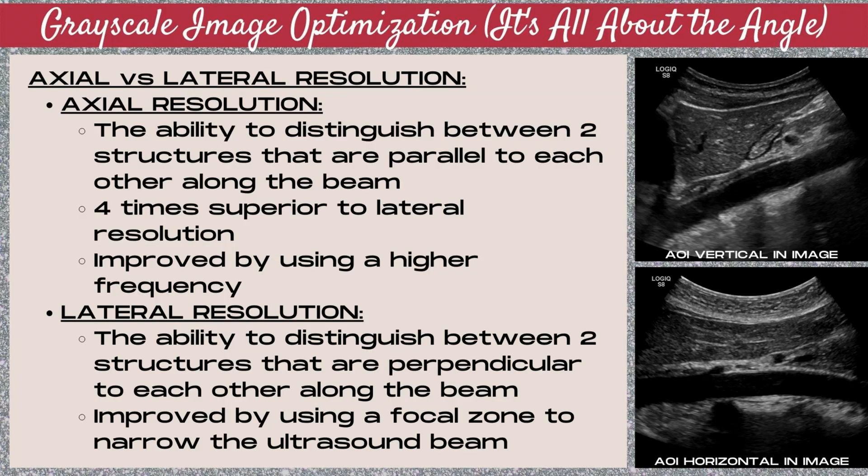So why does angle even matter when we're just optimizing grayscale images? It all goes back to resolution. Axial resolution is the ability to distinguish between two structures that are parallel to each other along the ultrasound beam, and this is four times superior to lateral resolution. Axial resolution is easy to improve simply by using a higher frequency transducer.